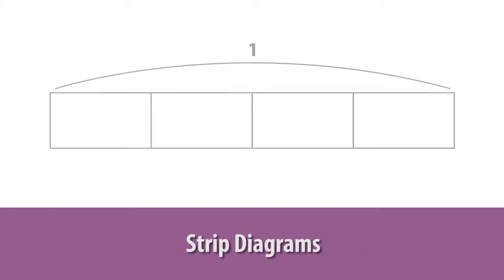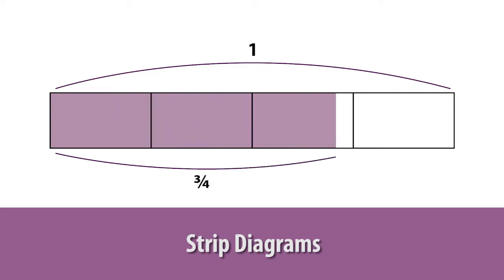Strip diagrams are drawings of narrow rectangles that show relationships among quantities. In upper grades, students can use strip diagrams to help them reason about and solve a wide variety of word problems about related quantities.